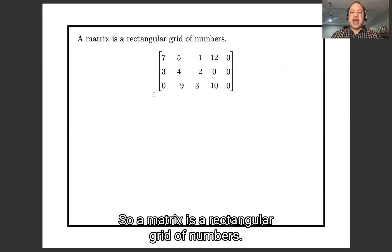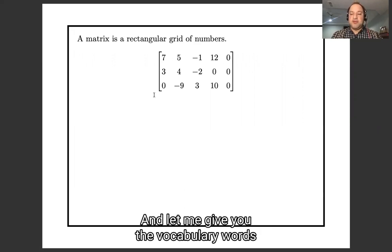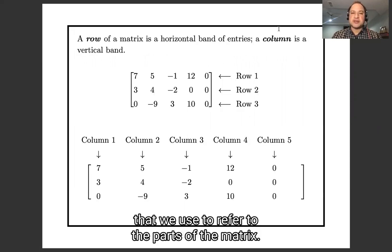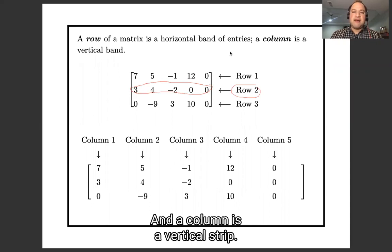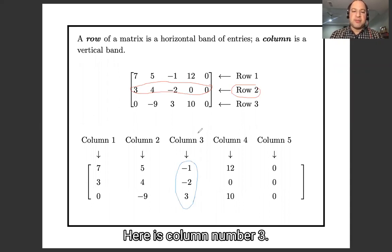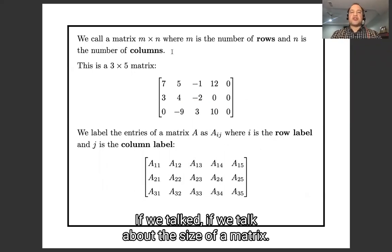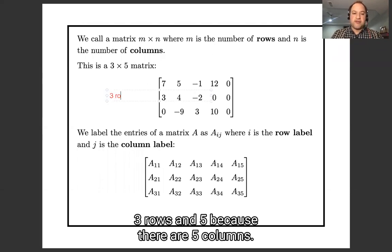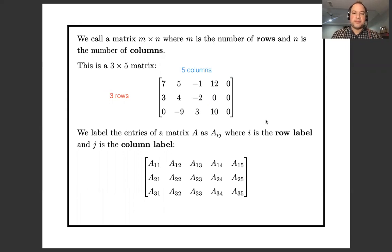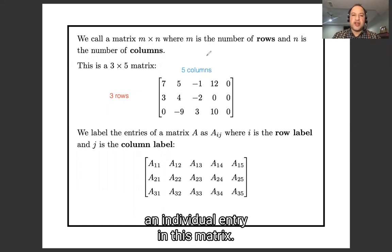A matrix is a rectangular grid of numbers. And let me give you the vocabulary words that we use to refer to the parts of the matrix. A row is a horizontal band. So here is row number two. And a column is a vertical strip. Here is column number three. If we want to talk about the size of a matrix, we would say, for example, if this is a three by five matrix, that's three because there are three rows and five because there are five columns.